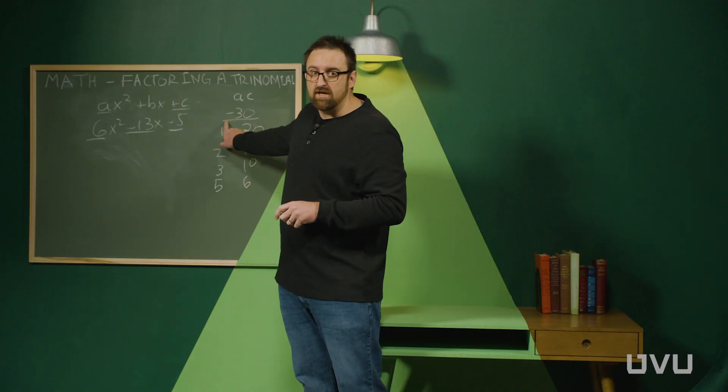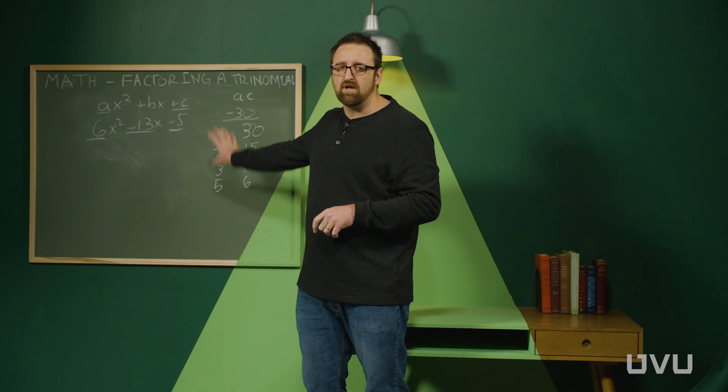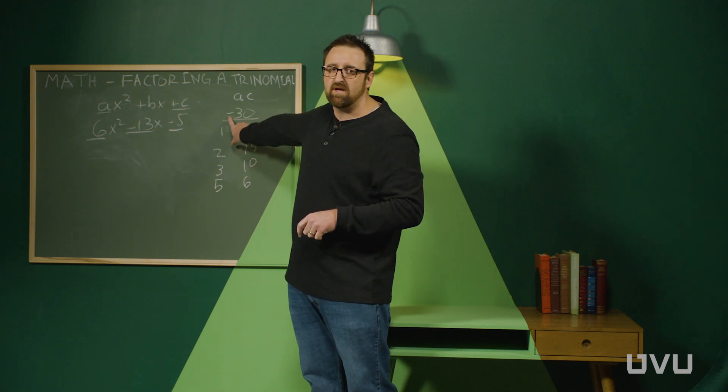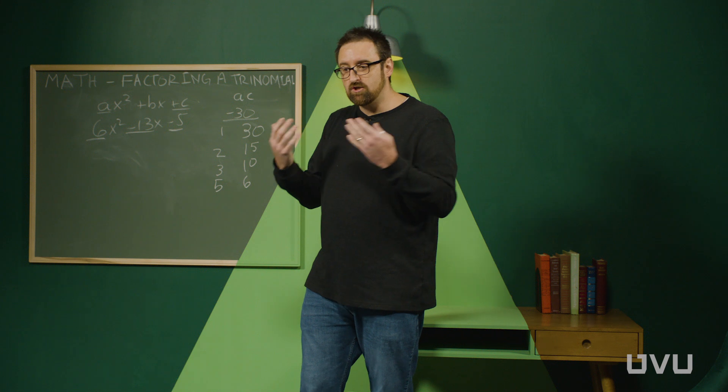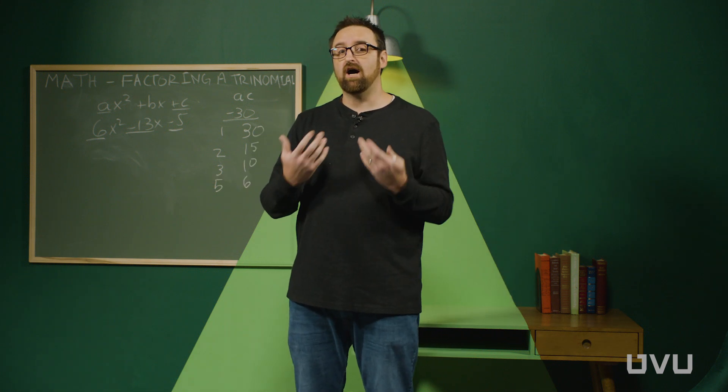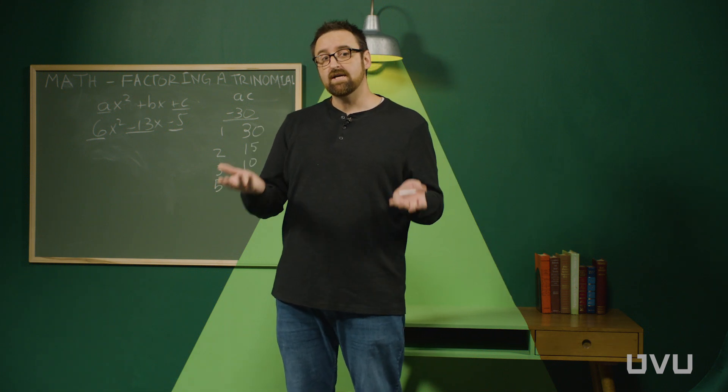Now this is where the sign comes into play. Because these are the numbers that multiply to 30. But we need numbers that multiply to negative 30. What that means is that the two numbers that we're multiplying together have to have opposite signs so that the result is a negative number.